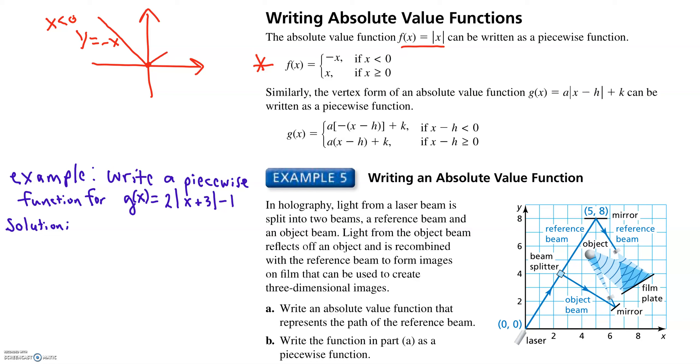Then at x equals 0, it turns and follows the line y equals x. So we'll follow that if x is greater than or equal to 0. And that's where this piecewise function comes from.